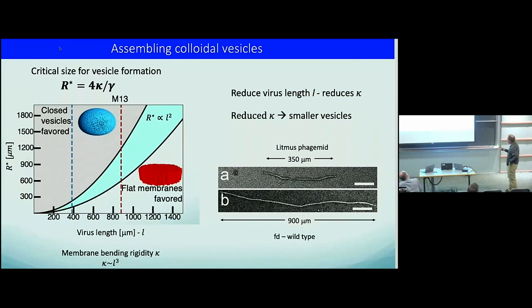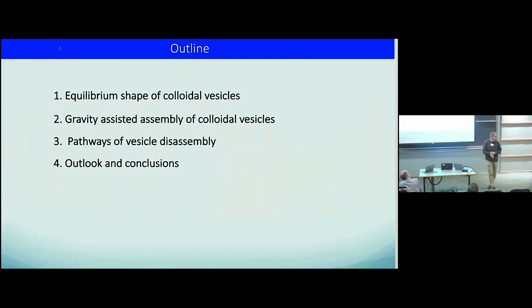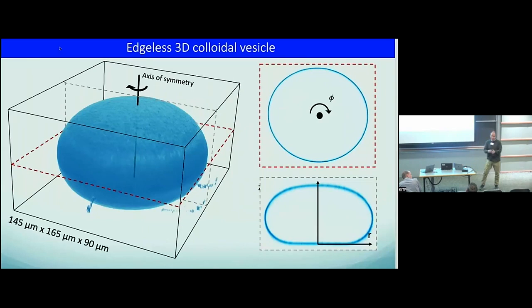This is our wild type virus. Its length is determined by how long the DNA is — we simply chop the DNA and can make these viruses anywhere from 100 nanometers to many microns. With 350 nanometer long rods, vesicles should form on the length scale of about 100 to a few hundred microns, giving us a chance to observe the transition from flat sheets to closed vesicles. I want to show that these actually form colloidal vesicles and discuss the pathways of vesicle formation and disassembly.